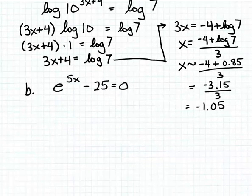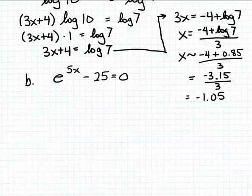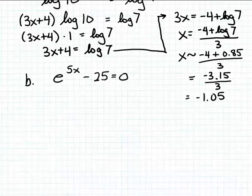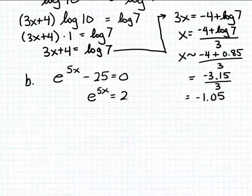Now let's look at example b. This is very similar — again, we have an exponential equation because the unknown is in the exponent of a power. To solve for x, we first isolate the exponential term on one side of the equation by itself. Adding 25 to both sides gives us e to the 5x is equal to 25.